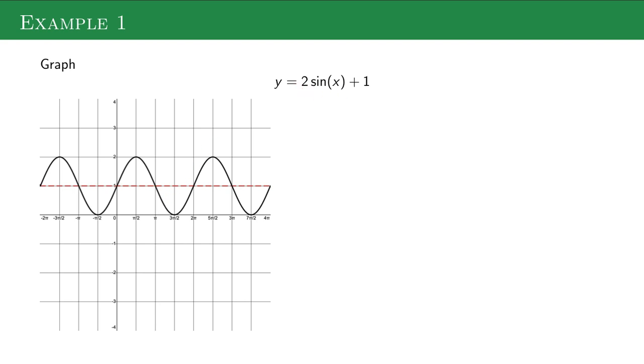But then this 2 here is the amplitude. It's just going to make the waves 2 high instead of 1 high. I remove the old stuff. This is my final graph. So I moved up 1, creating a new midline, with waves of height 2.